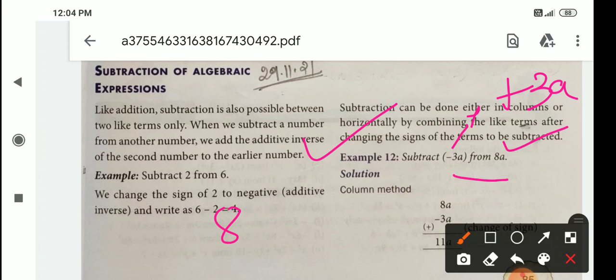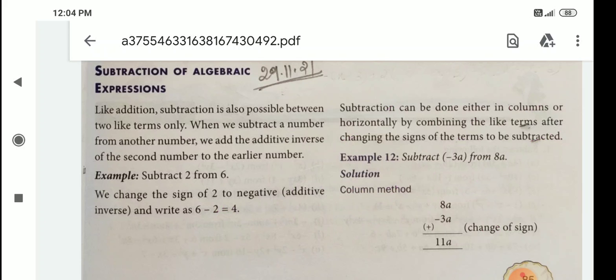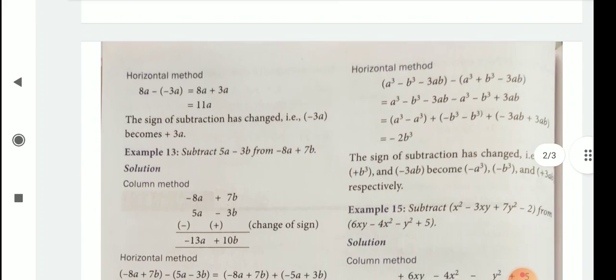So 8a plus 3a, that is 11a. This is horizontally method. And this is column method. Okay, first column method is given, then horizontally method is given. Clear?